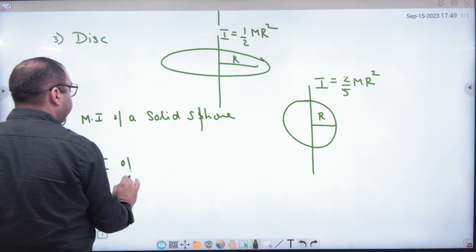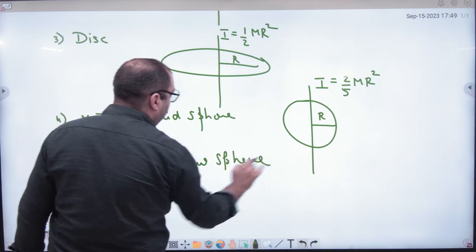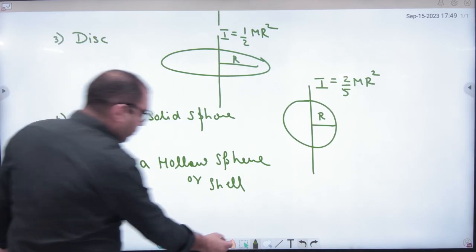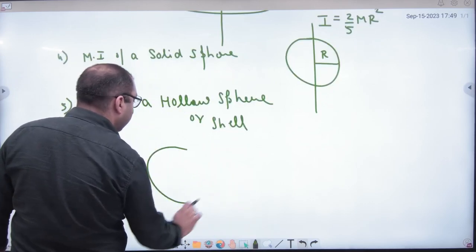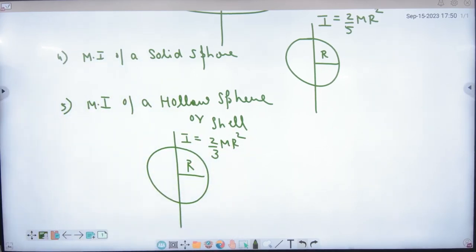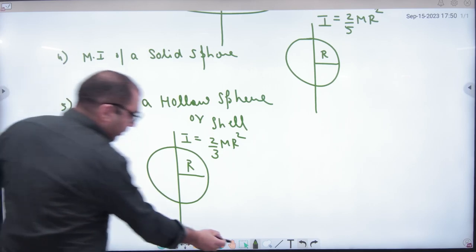Moment of inertia of a hollow sphere — also called a spherical shell. It is empty inside. If the axis passes through the center, the formula is I = (2/3)mr². To summarize: solid sphere is (2/5)mr², hollow sphere is (2/3)mr².